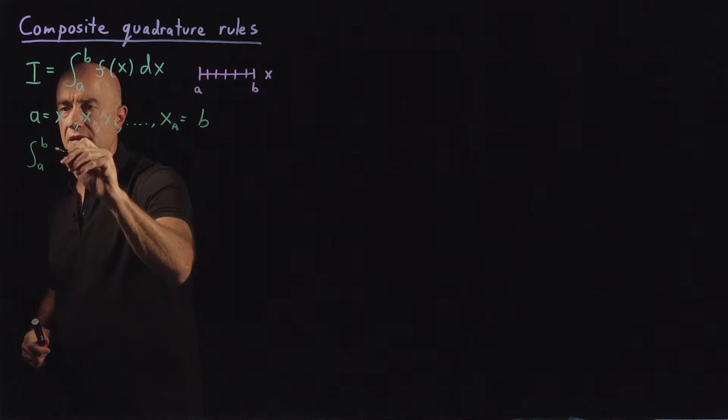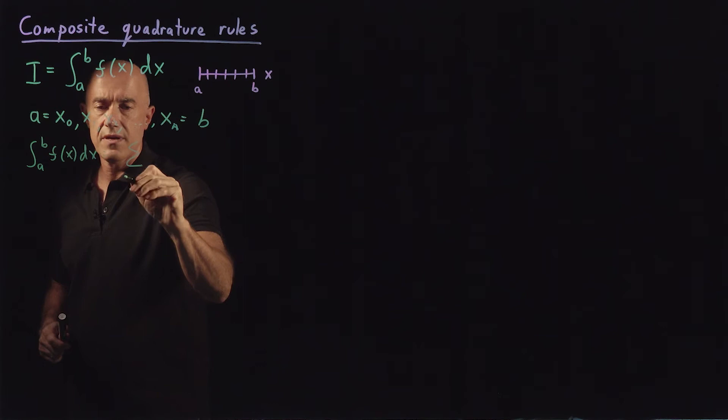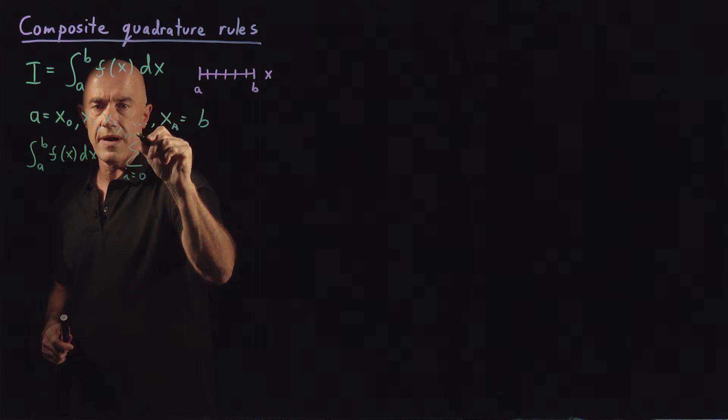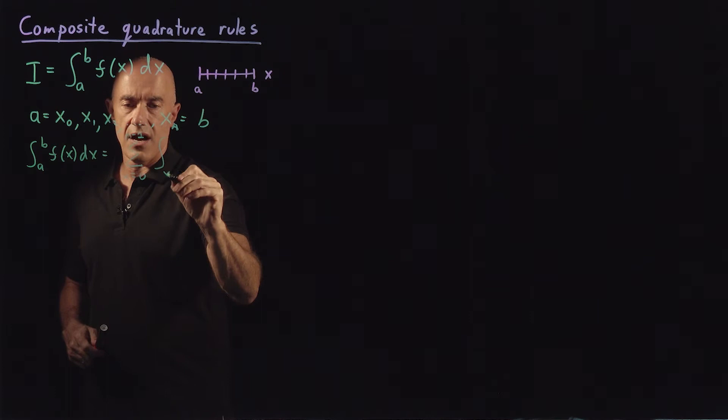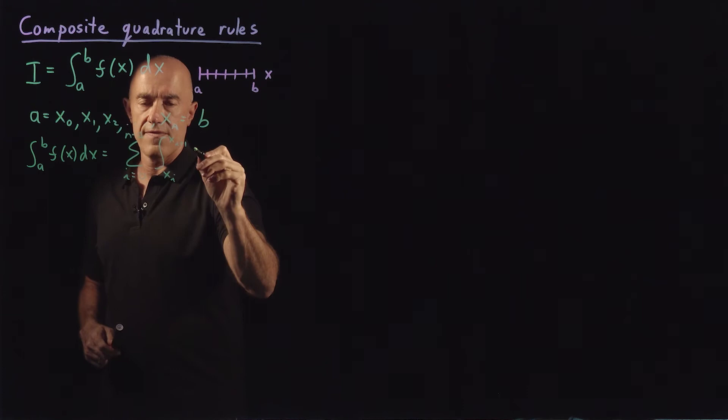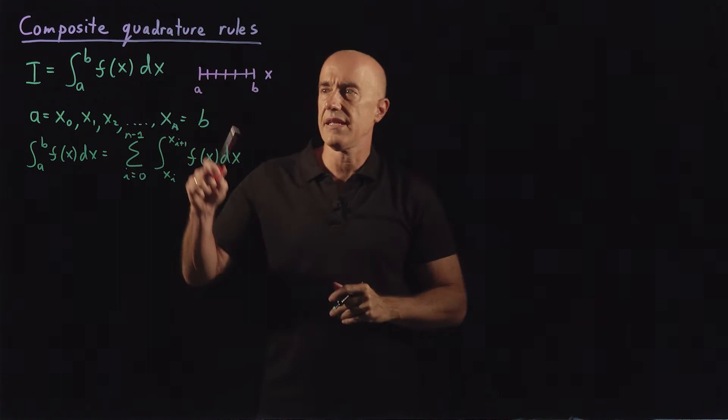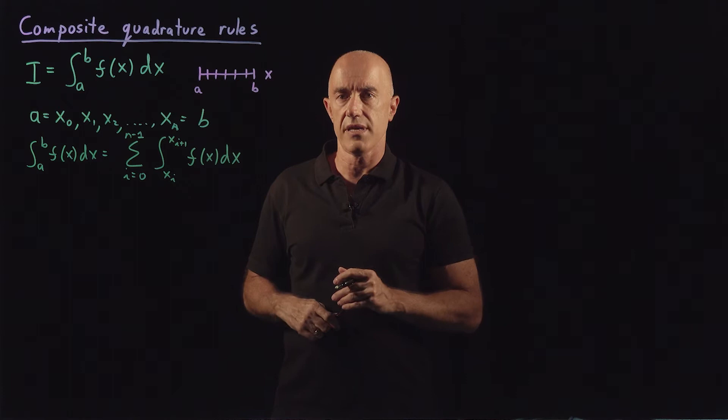So we have the integral from a to b of f of x dx, which becomes the sum from i equals 0 to n minus 1 of the integral from xᵢ to xᵢ₊₁ of f of x dx. Each of these little integrals is going to be an elementary integral.